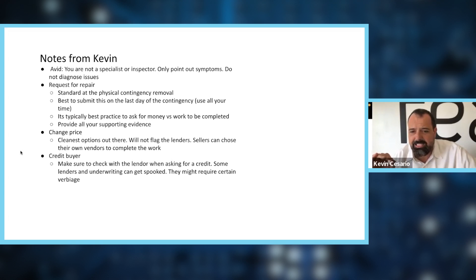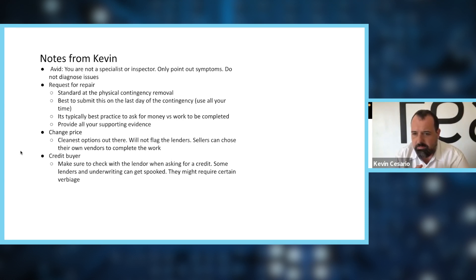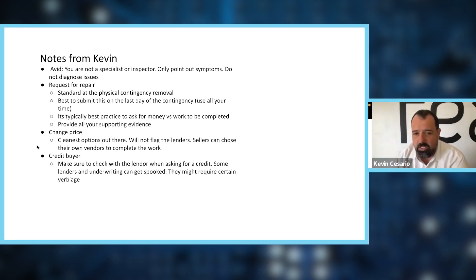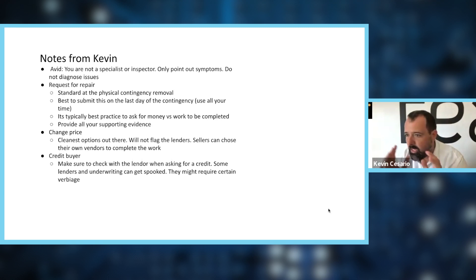A request for repair is typically done at the physical contingency removal. I would say 99 out of 100 times it's best to submit on the last day possible. You can have a seventeen-day physical contingency and know on day two you're going to ask for ten thousand dollars — I'm waiting until day seventeen. The reason: if there were other offers on the table, I want to give them time to lose interest. Psychologically, the further you get into the contract, the more sellers feel committed — they're already counting their money. Take all the time you possibly can.